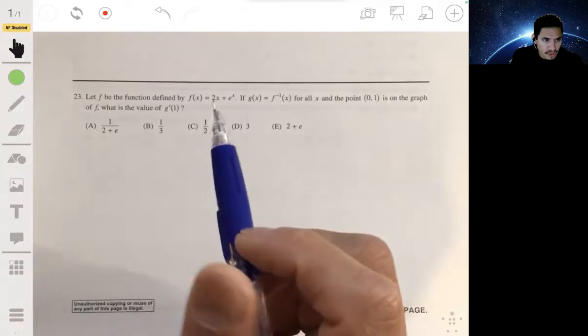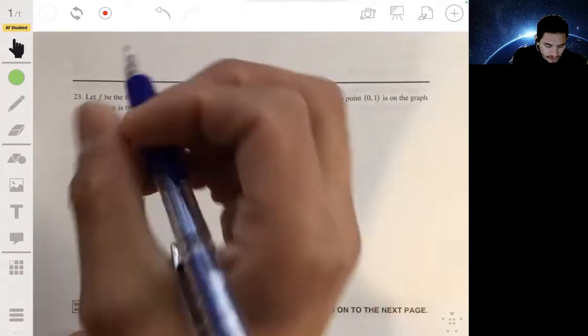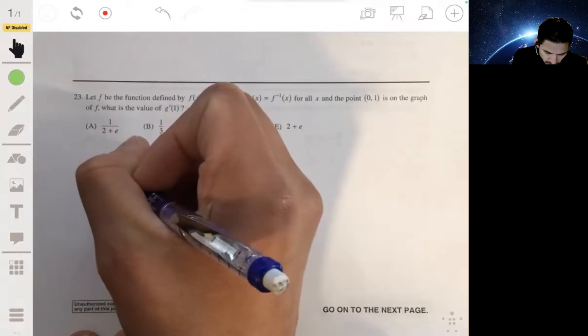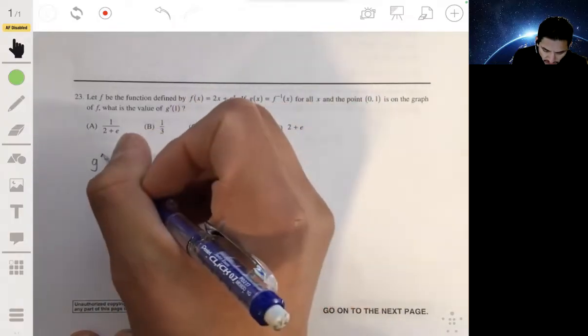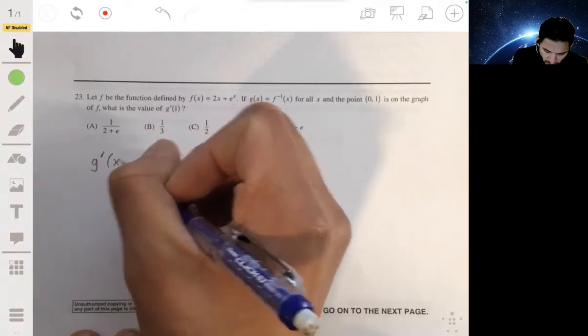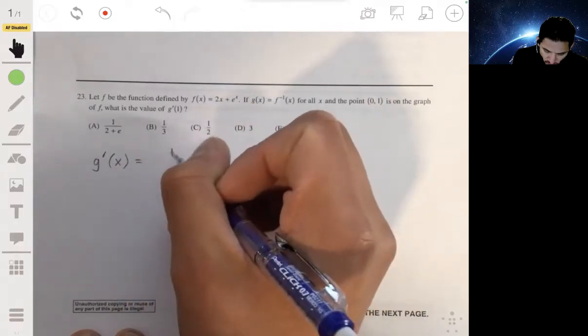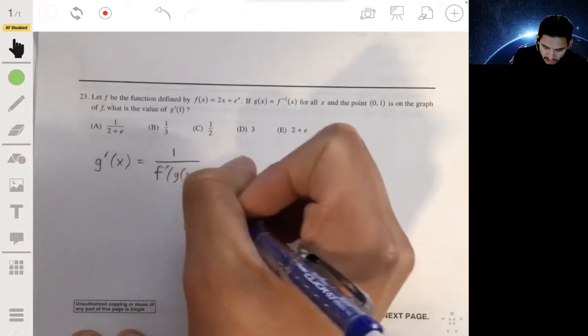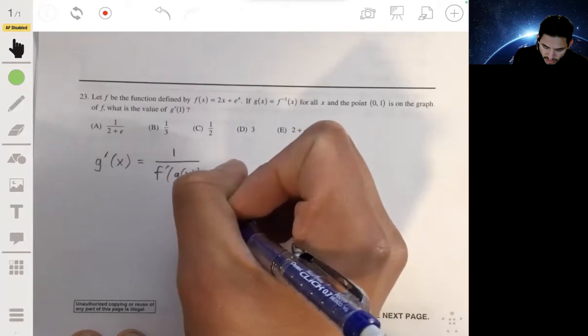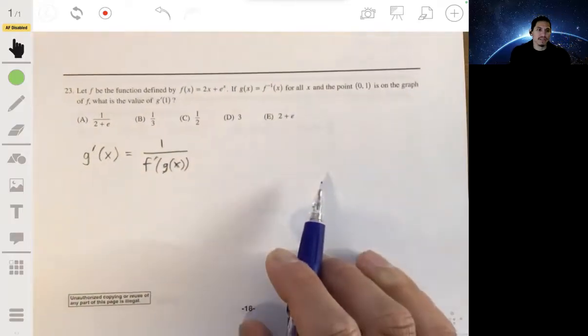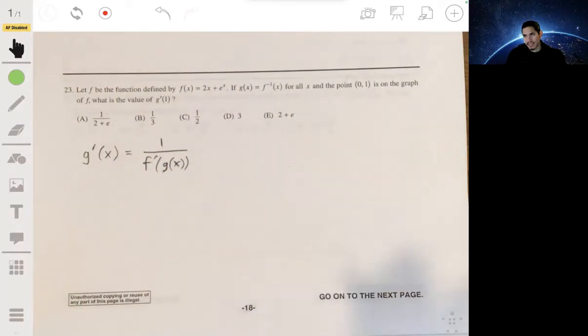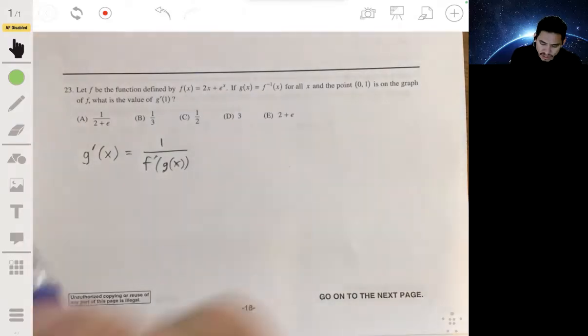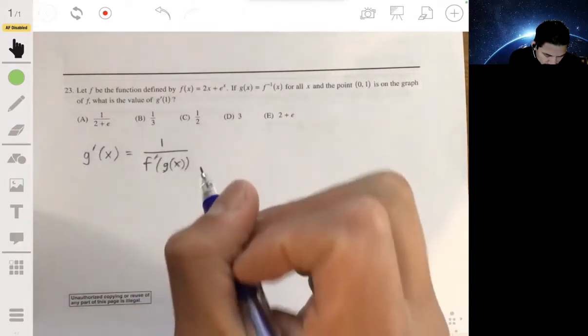It's going to be helpful for you to just remember the inverse derivative rule. If g and f are inverse functions of each other, then g prime of x will be equal to 1 over f prime of g of x. You can technically derive this, but it's going to take more work and more time, so just memorize this.